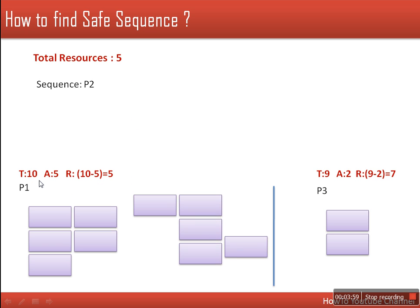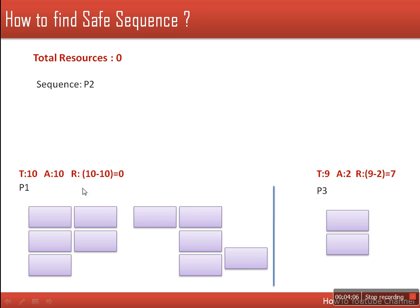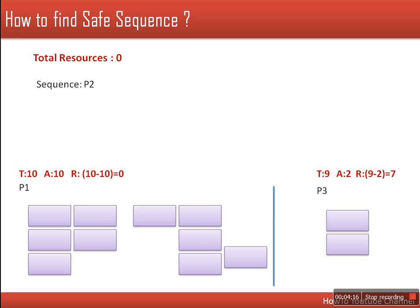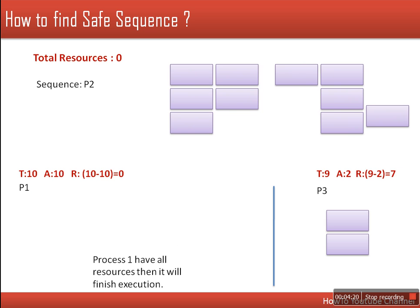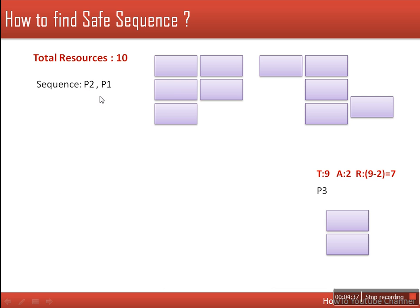These resources will be allotted to process P1. Now P1 also has all of its resources, so P1 will complete its execution. Once execution is over, all allotted resources will be released and become available — a total of 10 resources. So after P2 we allotted resources to P1, and P1 is next in the safe sequence. Now we are having only 1 process left, P3, which needs 7 resources, and we have 10.